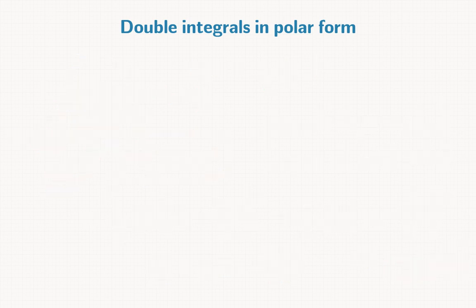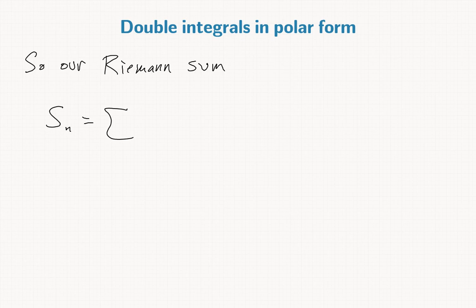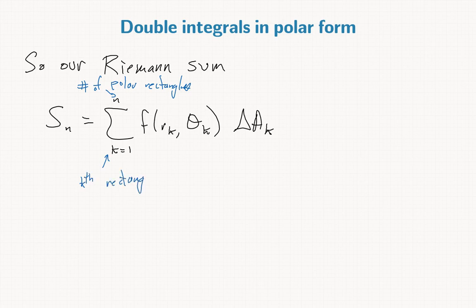Coming back to original setup, our Riemann sum, which was S_n is sum over f(r_k, theta_k) delta A_k. I'm omitting the indices to make this more readable. n is the number of polar rectangles in one of those partitions, and k just means the kth rectangle - we number them somehow, it doesn't matter how.